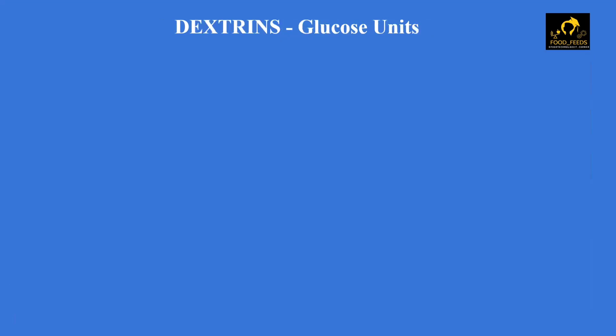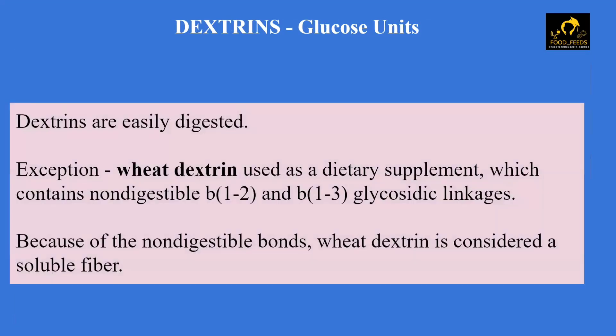When we consume dextrins, they are easily digested. There is one exception — wheat dextrin, which is used as a dietary supplement. Because it consists of non-digestible beta-1,2 and beta-1,3 glycosidic linkages, it is not digestible. Since it doesn't have a digestible bond, wheat dextrin is considered a soluble fiber.